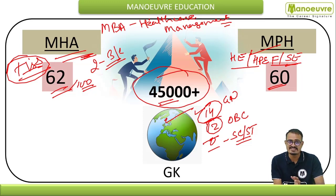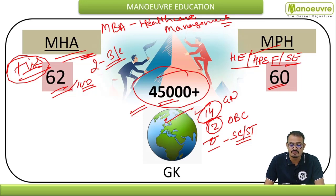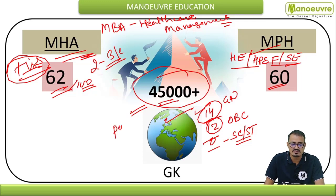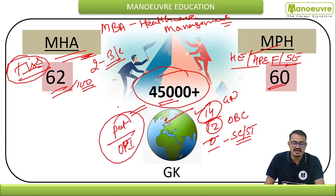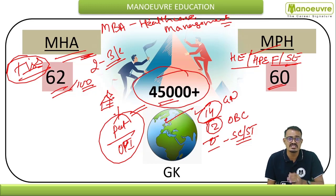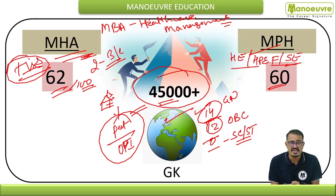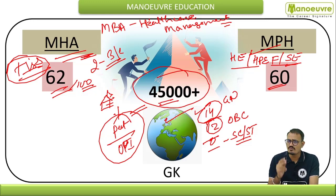Cracking the TISS NET is not the end of the race. The second stage consists of TISS PAT and the OPI. Here you need detailed knowledge about hospitals — how they run, all terminology, nomenclatures, disease mitigation, prevention, care, and treatment. Only then will you be selected as the right candidate for the course, because competition increases every year.